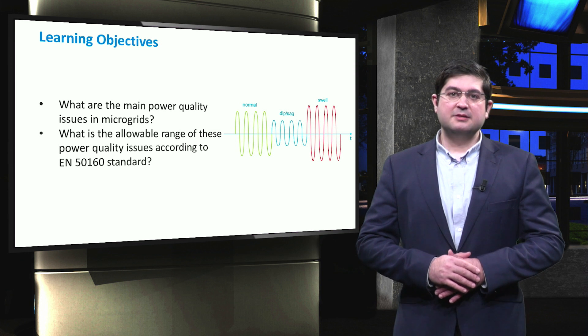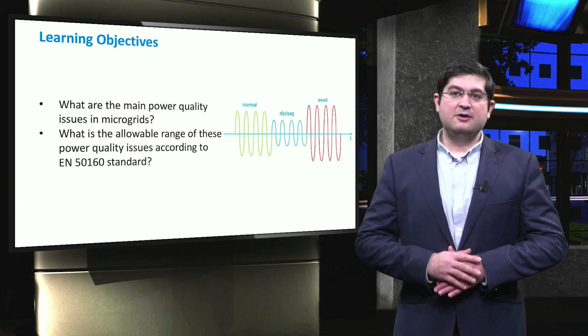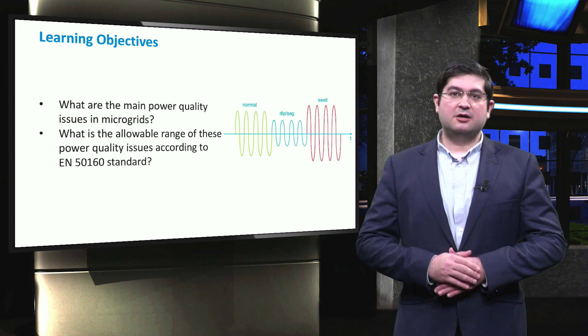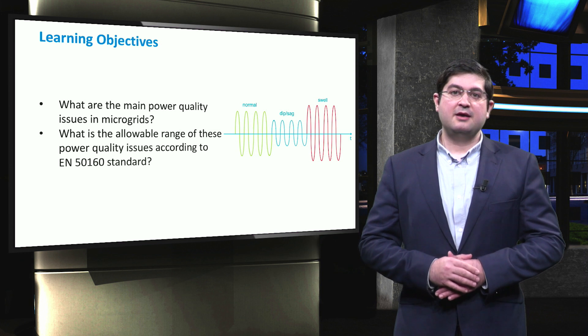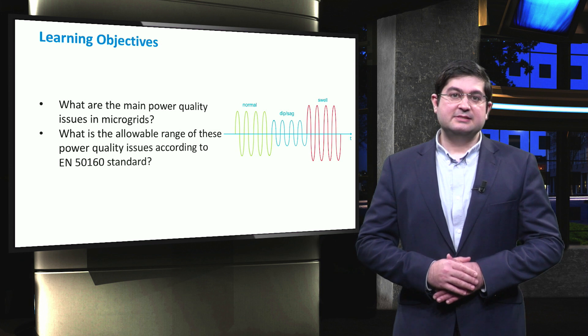The main learning objectives will fall under two main questions. Firstly, what are the main power quality issues in microgrids? Secondly, what is the allowable range of these power quality issues according to EN 50160 standard?